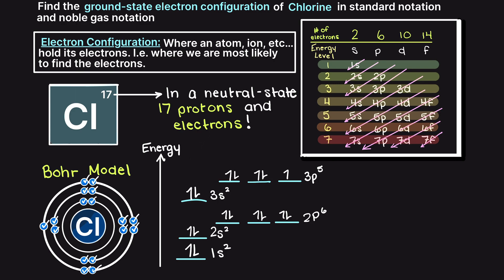Now that we have placed all of our electrons into the energy level diagram, we can write out our electron configurations. Firstly in standard notation we have 1s2, 2s2, 2p6, 3s2, and lastly 3p5.